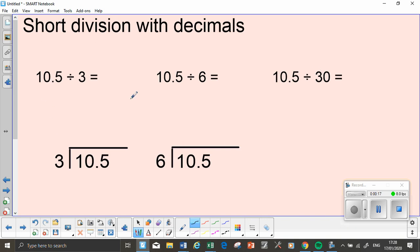The first one I'm going to do is 10.5 divided by 3. You say to yourself, how many 3's go into 1? That's 0, you don't have enough to complete a full group. So you move your 1 over here. Then you say, how many 3's go into 10? 3 times 3 is 9, so it's 3 and your remainder is 1.